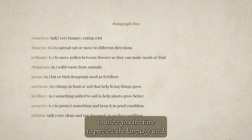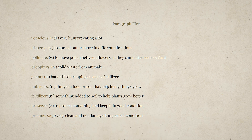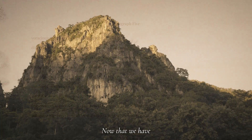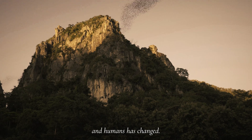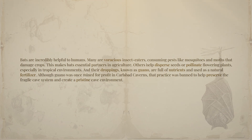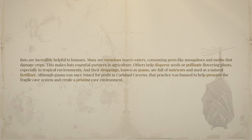Feel free to pause the video to preview the vocabulary for this paragraph. Let's see how the relationship between bats and humans has changed. Bats are incredibly helpful to humans — many are voracious insect eaters, consuming pests like mosquitoes and moths that damage crops. This makes bats essential partners in agriculture. Others help disperse seeds or pollinate flowering plants, especially in tropical environments. Their droppings, known as guano, are full of nutrients and used as a natural fertilizer. Although guano was once mined for profit in Carlsbad Caverns, that practice was banned to help preserve the fragile cave system and create a pristine cave environment.